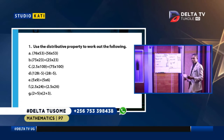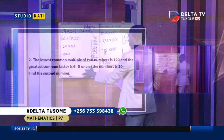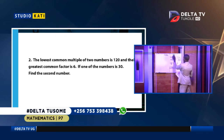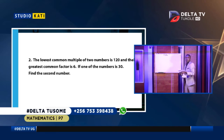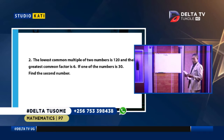Those remaining numbers you will try them. Now let's go to number two. We are saying that the lowest common multiple of two numbers is 120 and their greatest common factor is 6. If one of the numbers is 30, find the second number.